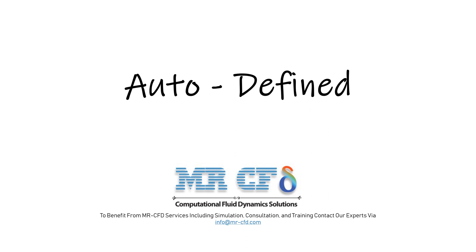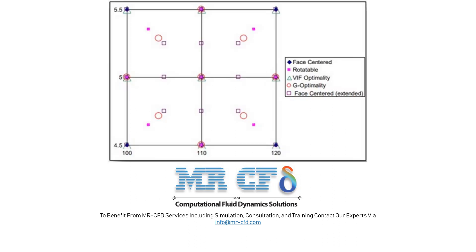In the auto-defined mode, the software automatically selects the most appropriate CCD model according to the number of input variables, usually choosing between G-optimality and VIF. It is recommended to use the automatic software selection mode, but if the divided values of the input parameters do not show a good fit with the response surface diagram, it is better to use a rotatable model. This figure shows the design point space for a model with two input parameters, simultaneously locating design points based on different CCD patterns — face centered, rotatable, VIF optimality, and G optimality — allowing comparison of their distributions.